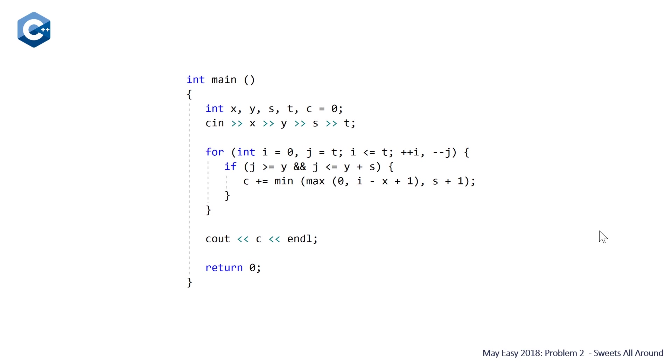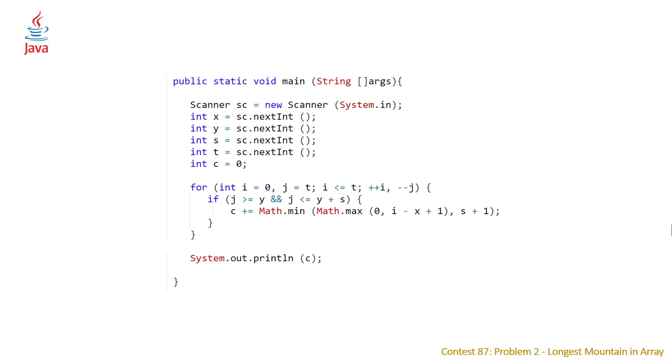Our next solution is our Java solution, very similar. The biggest difference is how you read in the input, which takes up a few more lines, but the for loop is very similar. Once again our two moving indices i and j set the same way, pre-incremented and pre-decremented the same way. The only thing that's different is our min and max function, which you have to get from the math library, so it's math.min and math.max.